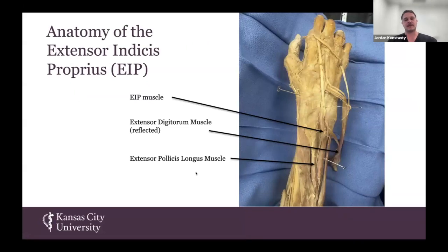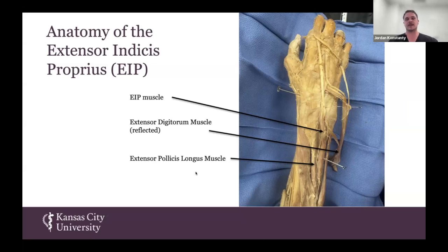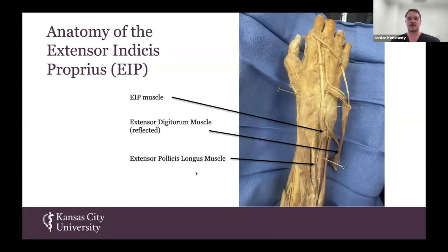Before I start, I just want to briefly dive into what the extensor indices is. The extensor indices proprius muscle is contained within the posterior compartment of the antebrachium. It functions to independently extend the second digit. Classically, the extensor indices arises from the posterior surface of the distal ulna, distal to the origin of the extensor pollicis longus. Its tendon forms proximal to the extensor retinaculum before traversing deep to it and continuing along the ulnar aspect of the extensor digitorum tendon towards its insertion site, inserting onto the extensor digitorum tendon opposite the head of the second metacarpal.